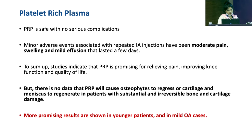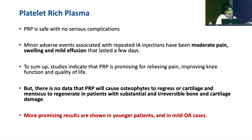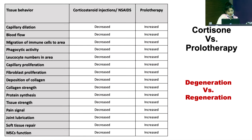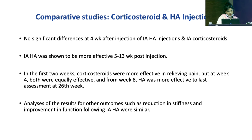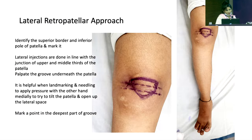PRP is usually given in three sets of injections, three to four weeks apart. It has shown good results in young individuals below 50 years of age with osteoarthritis of Kellgren-Lawrence grade 1 to 3. PRP is proven more effective than hyaluronic acid in that group. However, if the patient is beyond 50 years, intra-articular corticosteroid is better for acute OA flare. There are numerous RCT studies suggesting PRP is more effective than hyaluronic acid and steroid; at two to four weeks corticosteroids show maximum short-term relief.